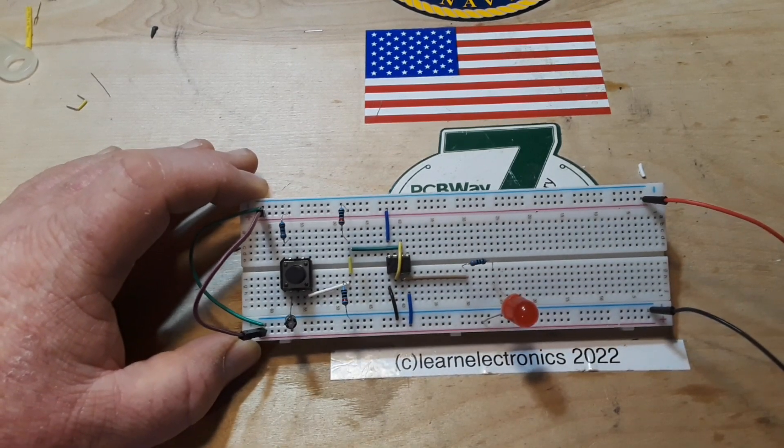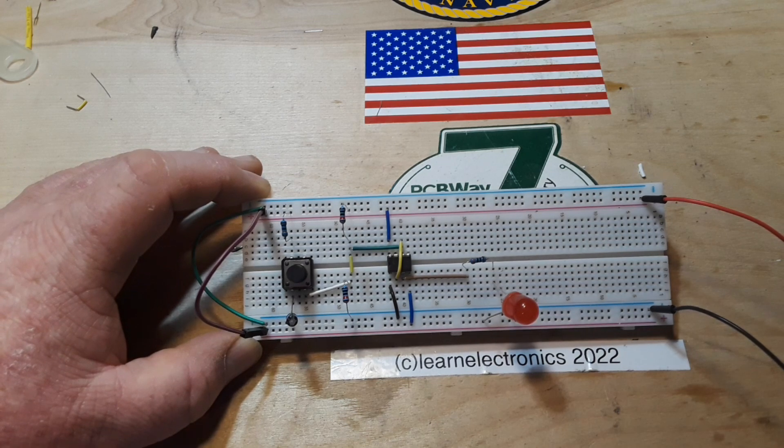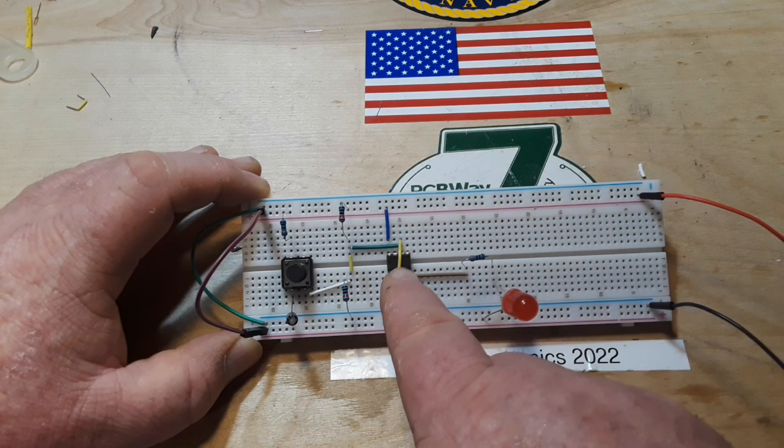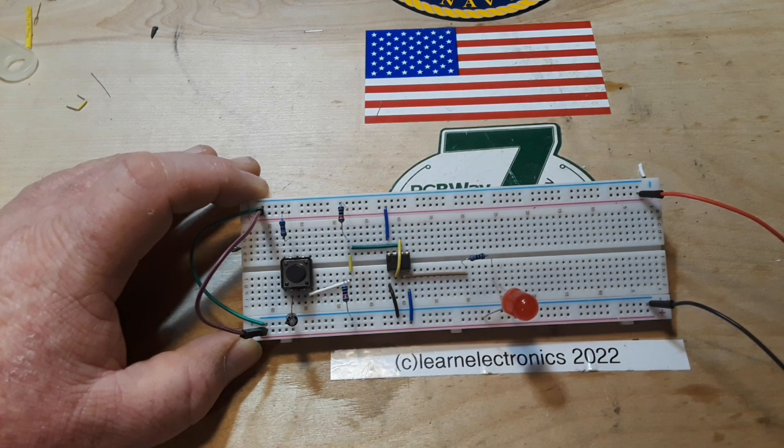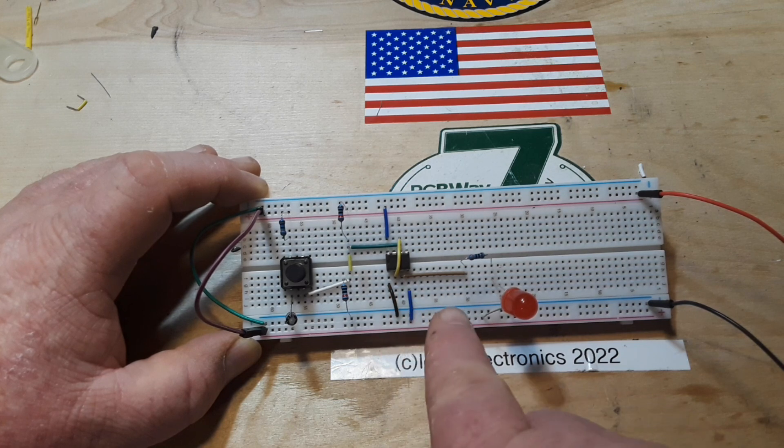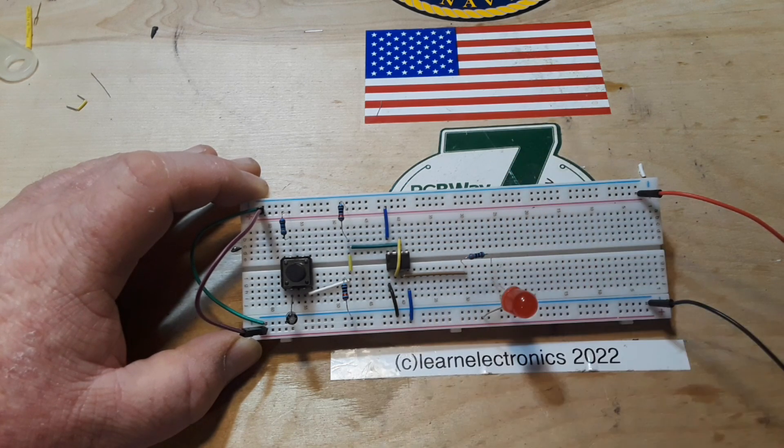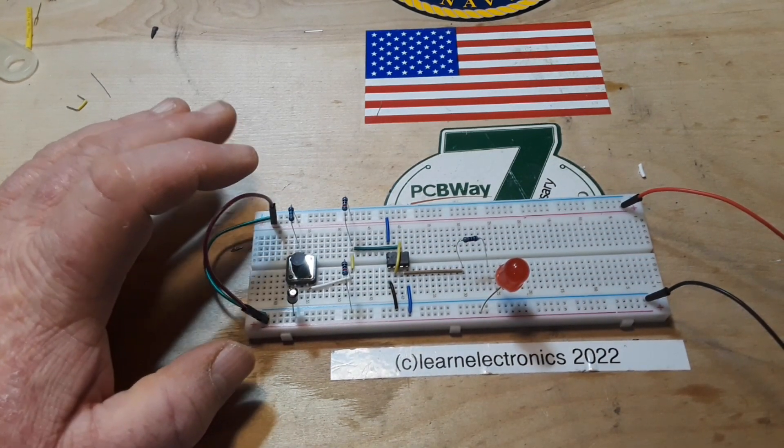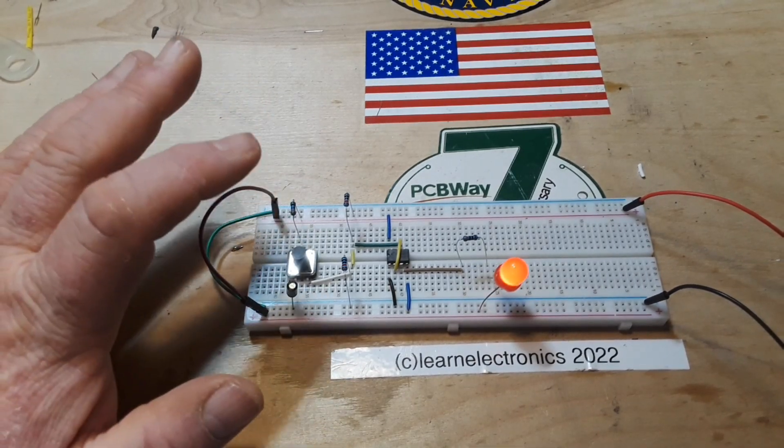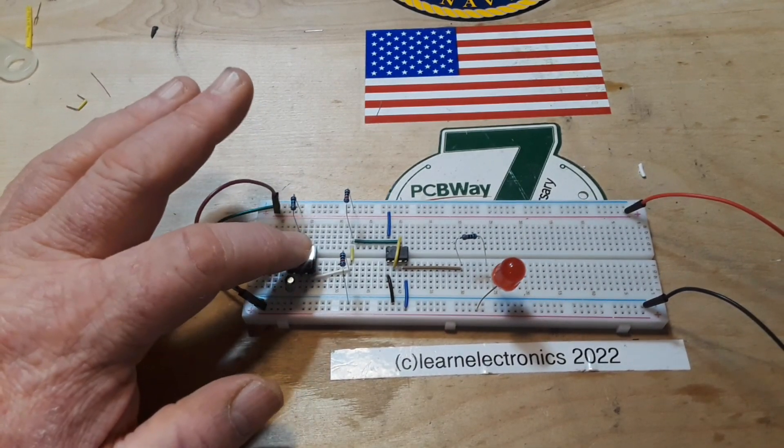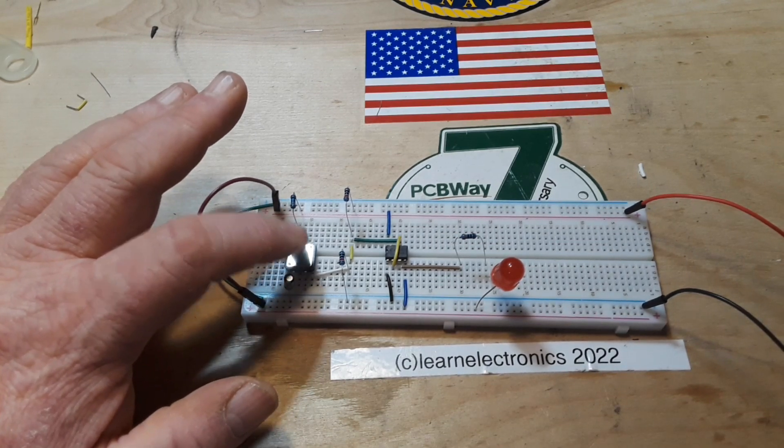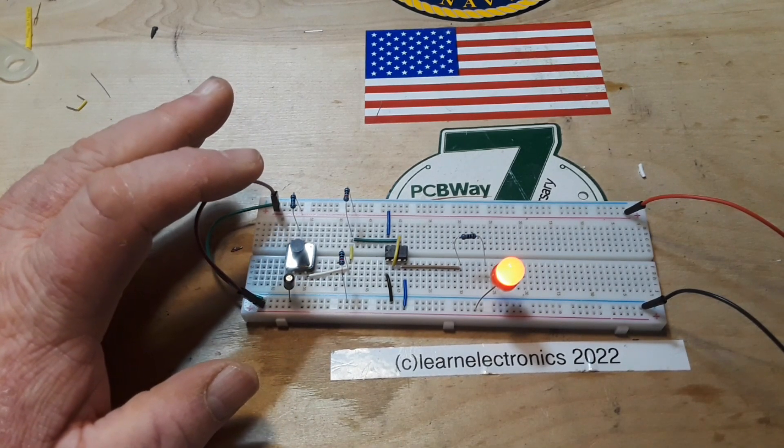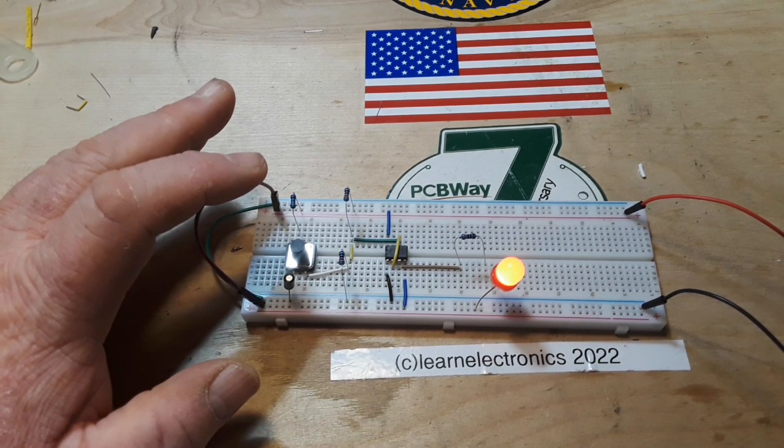...a 555 timer. Nothing to it but to do it. We're taking the output of the switch going into pin 6 and pin 2, our threshold and trigger pins. The output is going through a 330 ohm resistor to the LED. It just makes stuff so much fun and simple. There you go, a single button working. That's just pretty cool.